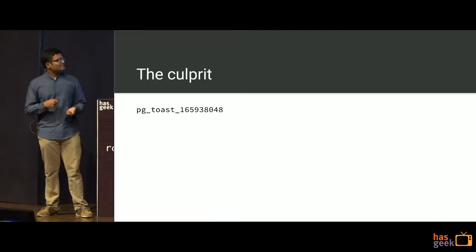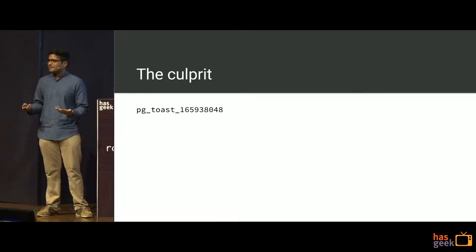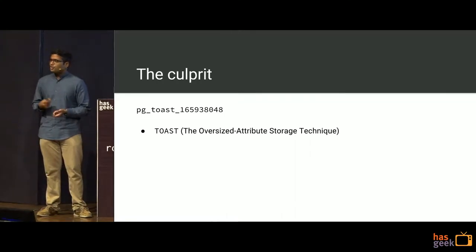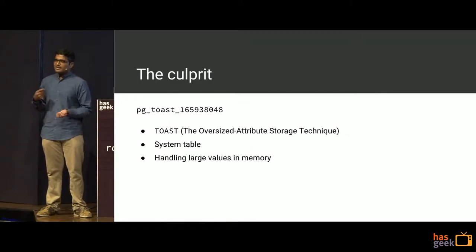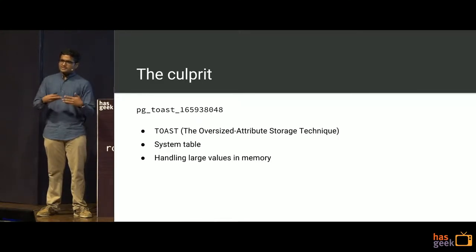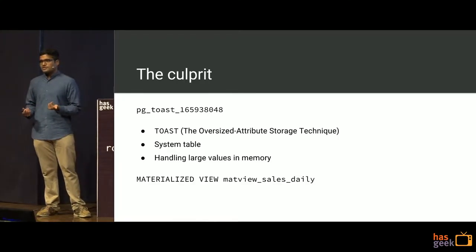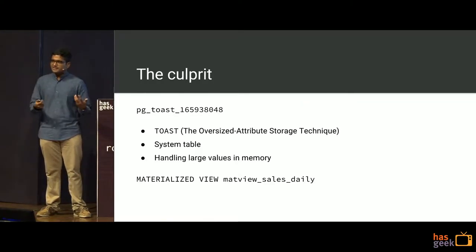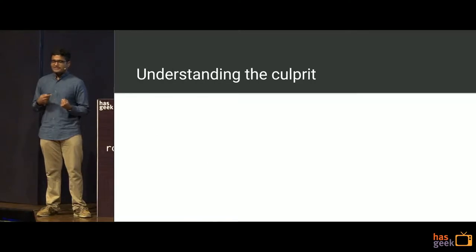The culprit's name seemed very archaic — it wasn't something we wrote, and it sounded like Postgres was handling something behind the scenes. The name is TOAST: it stands for oversized attribute storage. It's used to handle large values, so when you have a table with serious data in each column, the TOAST table supports the underlying user-created relation. It's a system table used for handling large values in memory. It turned out it was backing a materialized view called 'sales_daily.'